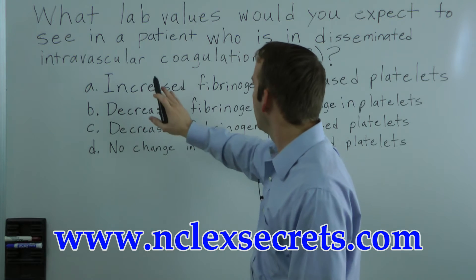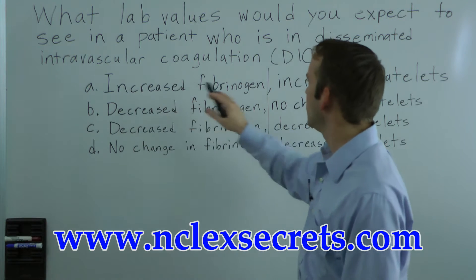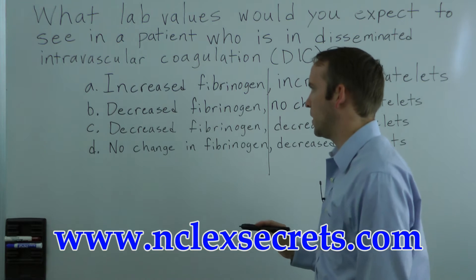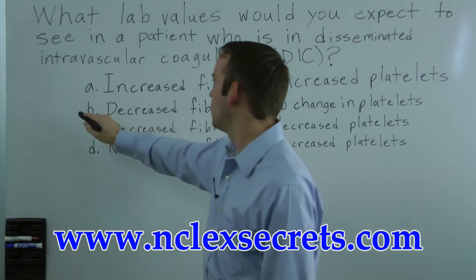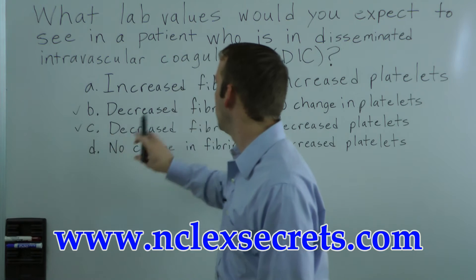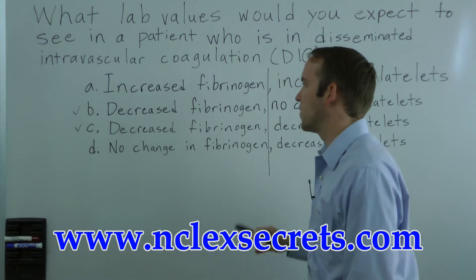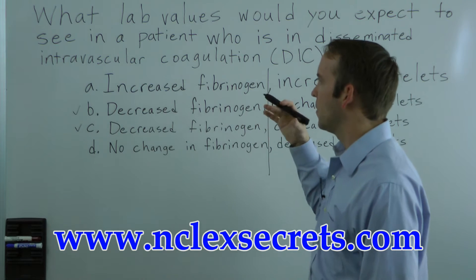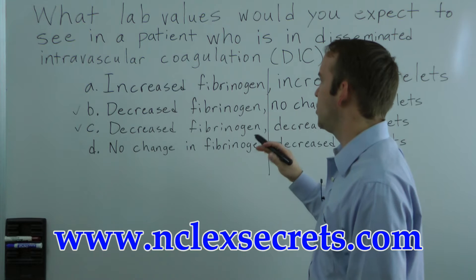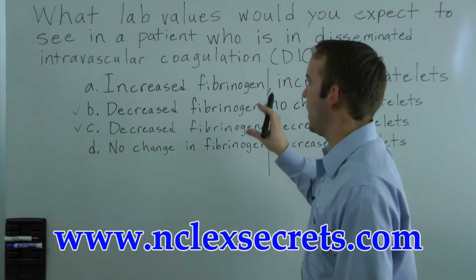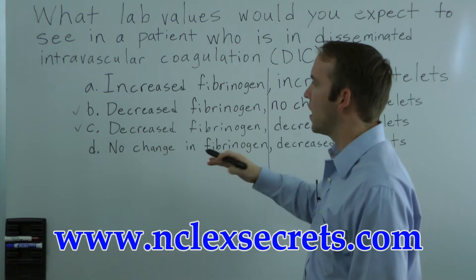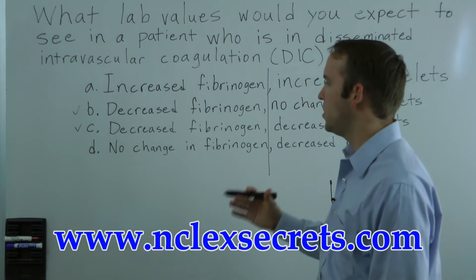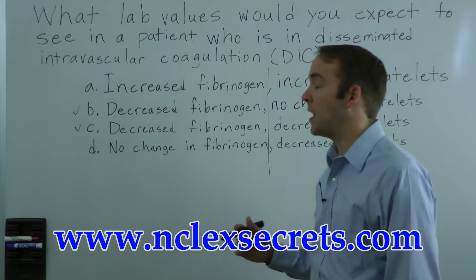If we look at just this side, we have one instance of increased fibrinogen, two of decreased fibrinogen, and one of no change in fibrinogen. So if you say majority rules, then the two decreased fibrinogen choices are likely candidates for the correct answer, because the person who wrote the question is trying to focus on that concept and may include partially correct choices to make sure you truly understand the subject matter.